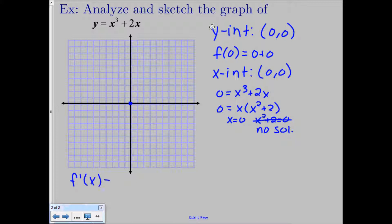So let's find our first derivative. So this is easy enough to do because it's just power rule. So we're going to do 3x squared plus 2. And then we're going to set that equal to 0 and see what we get. So we get 0 is equal to 3x squared plus 2.